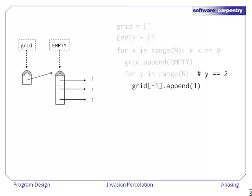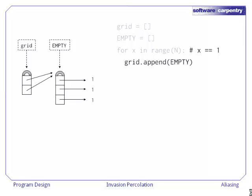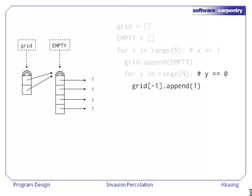We then go back to the outer loop and append empty again. The structure is now broken because both cells of the list pointed to by grid point to the same sublist, because empty is still pointing to that list even though we've changed it. When we go into the inner loop, we're appending ones to the same list that we were using last time.